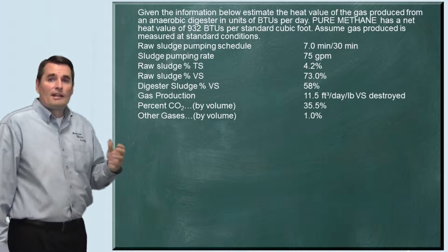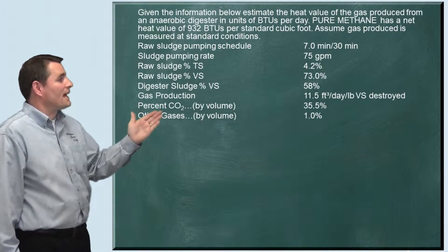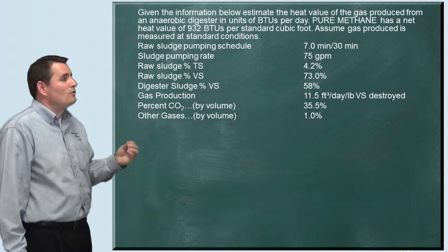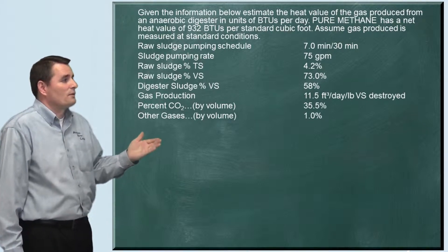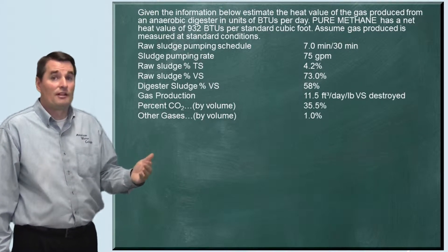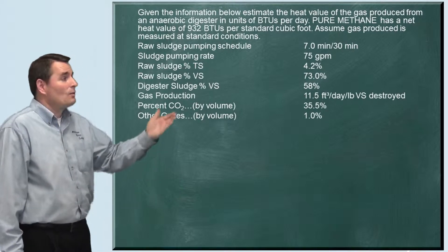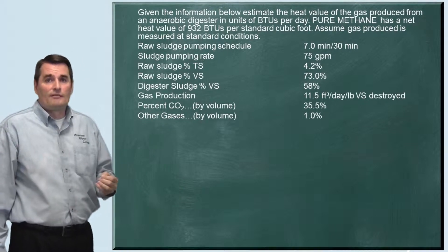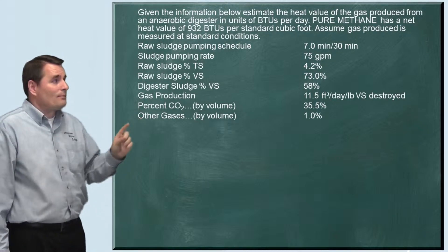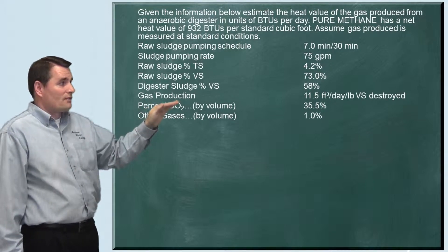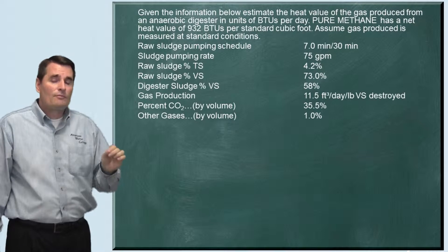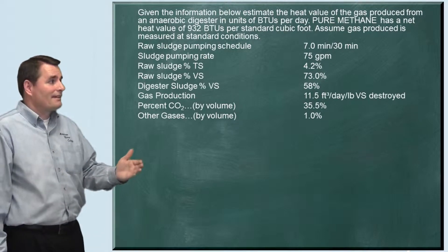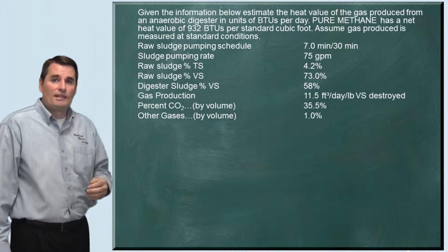The digested sludge percent volatile solids is 58% — that's after reduction in the digester. They also gave us an equivalent for gas production: for every pound of volatile solids destroyed in the digester, we get 11.5 cubic feet of gas produced. So for every pound per day of volatile solids destroyed, we get 11.5 cubic feet of gas.